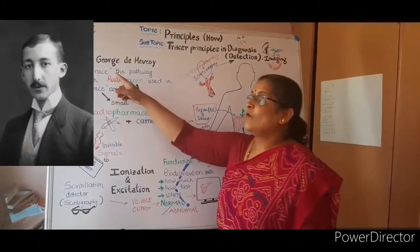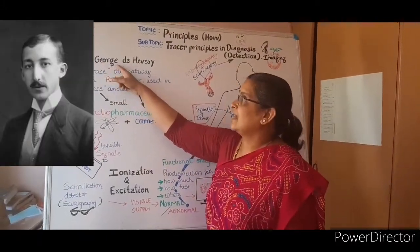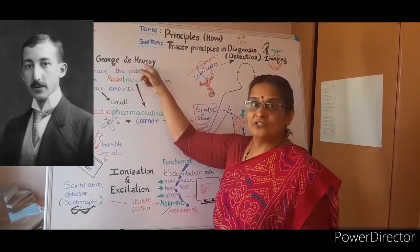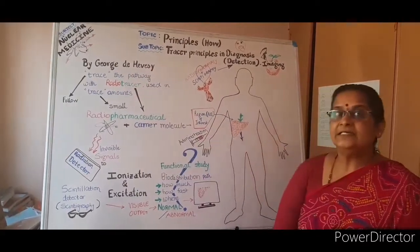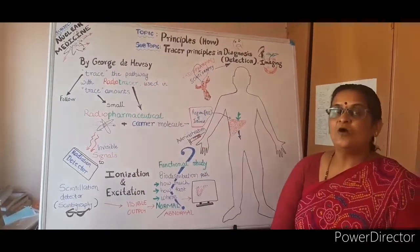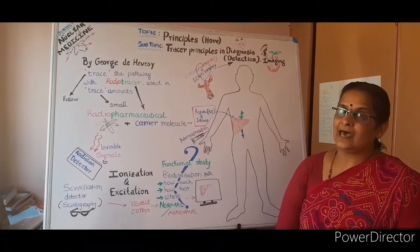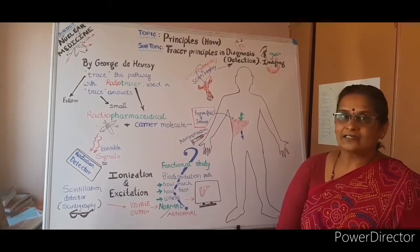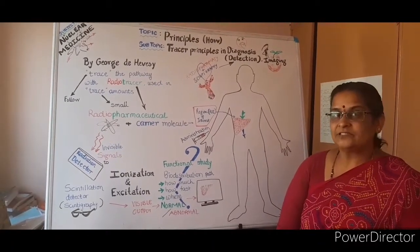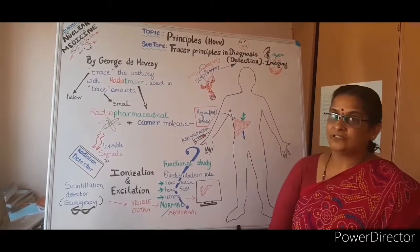Tracer principles were discovered by the great scientist George de Hevesy in the 1920s, who had worked on plants and animals using radioactive substances of thorium and phosphorus.